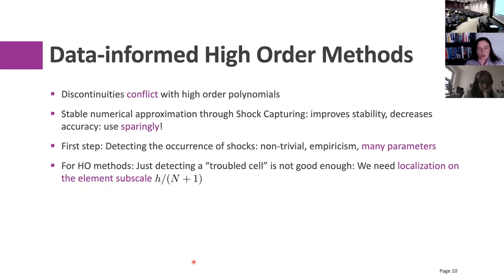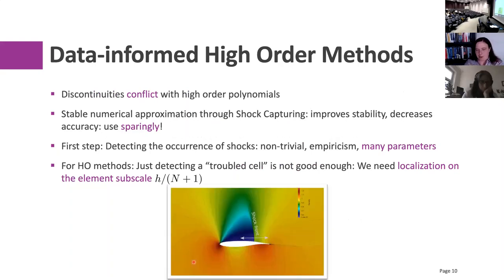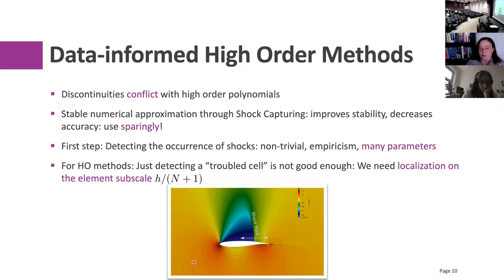We applied it to shock capturing. This is an aerospace crowd, so I don't need to tell you what shocks are. But for high-order methods that approximate the solution by a polynomial, a shock — which is essentially a discontinuity — can cause so-called Gibbs oscillations. You fit it with a polynomial; that's a mismatch. So you need to do what's called shock capturing: tweak your numerical scheme right where the shock is to be a little less accurate and a little more stable.